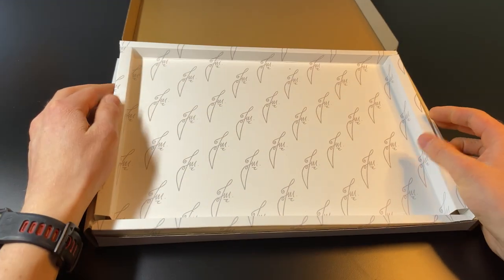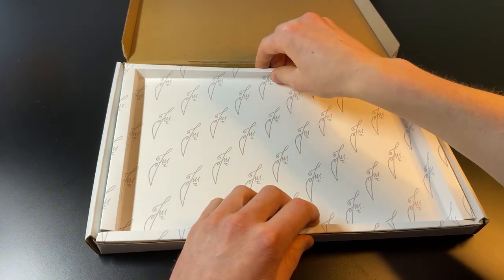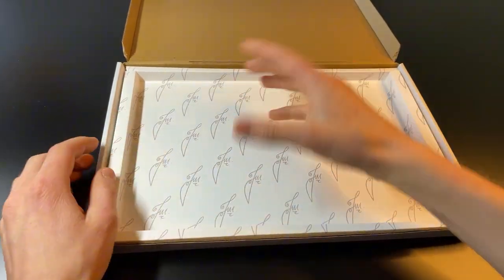I'm going to move this to one side for a second and I'm just going to bring in the actual posting box itself. What I do is I put a custom made tray inside of this, and this basically stops the print from being able to move around so that it won't dent whilst it's being shipped to you.